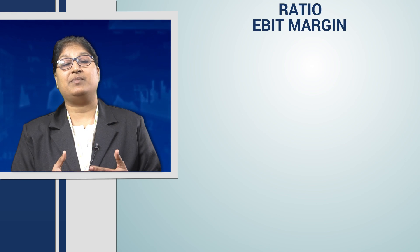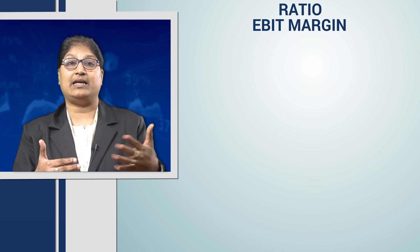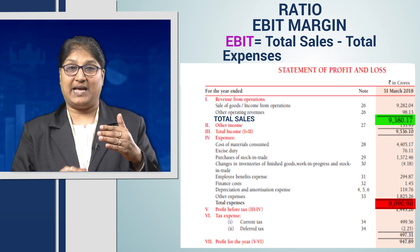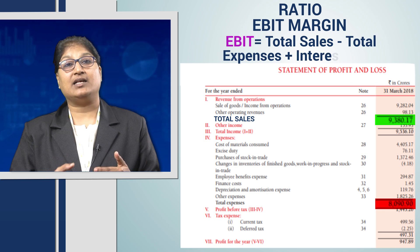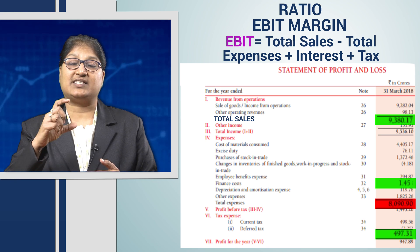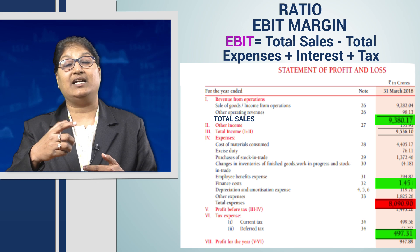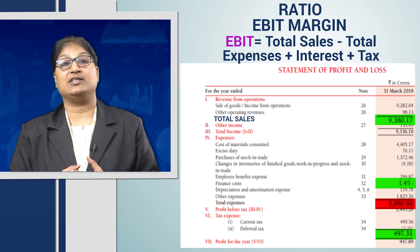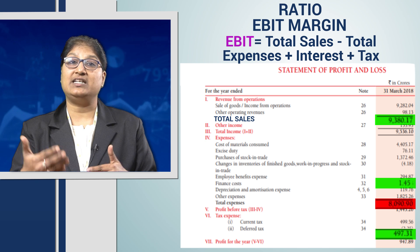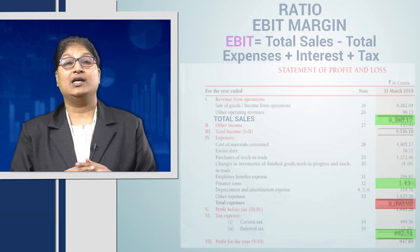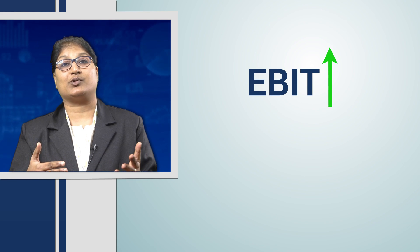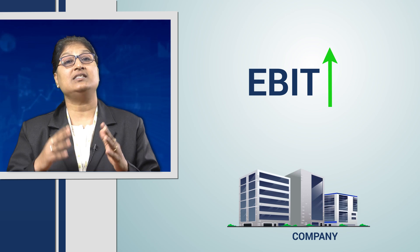Now what is EBIT margin? EBIT means total sales subtract total expenses, add back your interest and tax burden. So the value that you receive after you have added back interest and tax is known as your EBIT — that is total sales minus total expenses plus interest plus tax. More the EBIT grows for a company year after year or quarter after quarter, that tells you that the company is doing well.